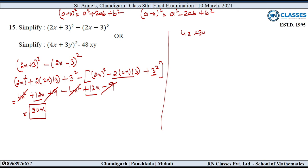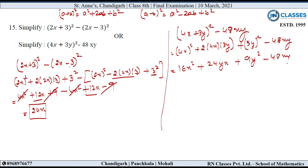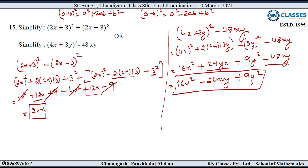And part B: Simplify (4x plus 3y) whole square minus 48xy. Applying a plus b whole square: (4x)² plus 2 into 4x into 3y plus (3y)² minus 48xy = 16x square plus 24xy plus 9y square minus 48xy. Then 24xy minus 48xy = minus 24xy. So the answer is 16x square minus 24xy plus 9y square.